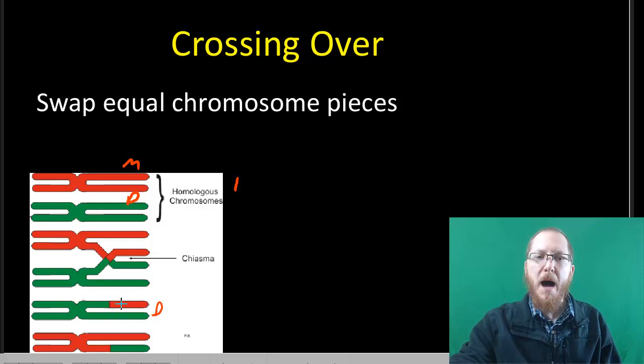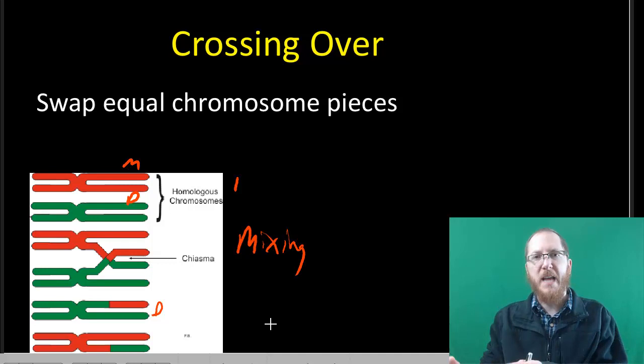So we now have what's essentially dad's chromosome, but it has a chunk of mom's for part of it, and we have mom's chromosome that has a chunk of dad's. So this is going to have the effect of mixing things. So we can have a single chromosome now that's not just moms or just dads, which is how it was at the start.